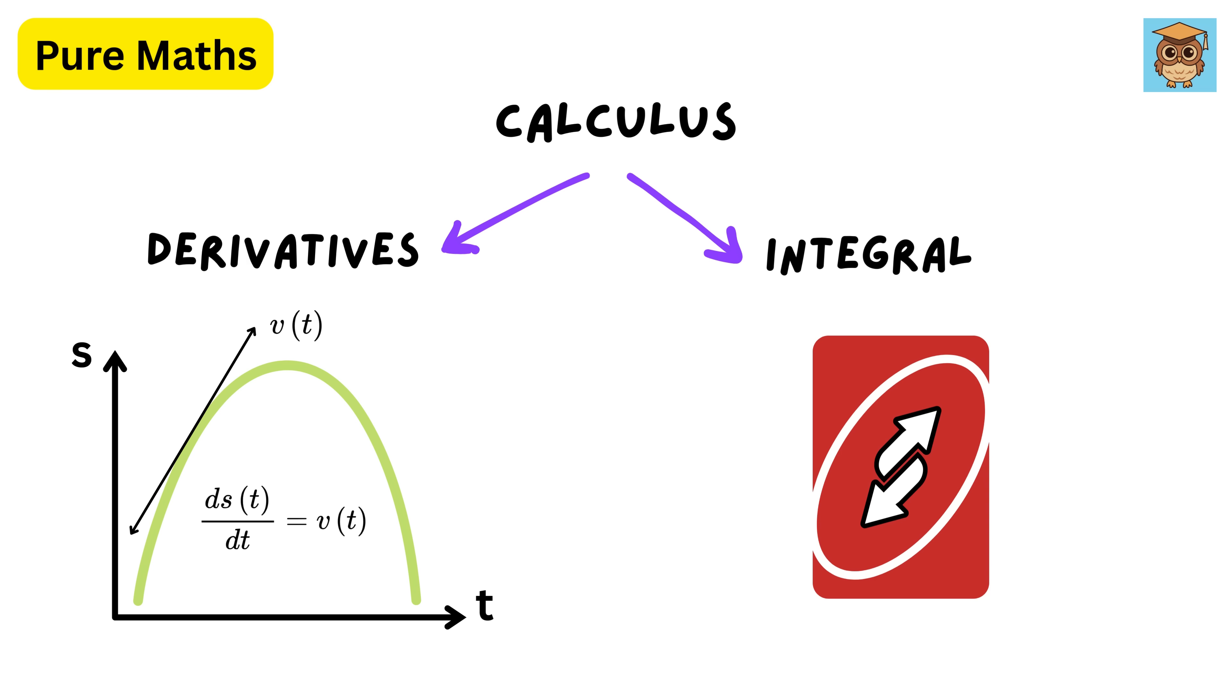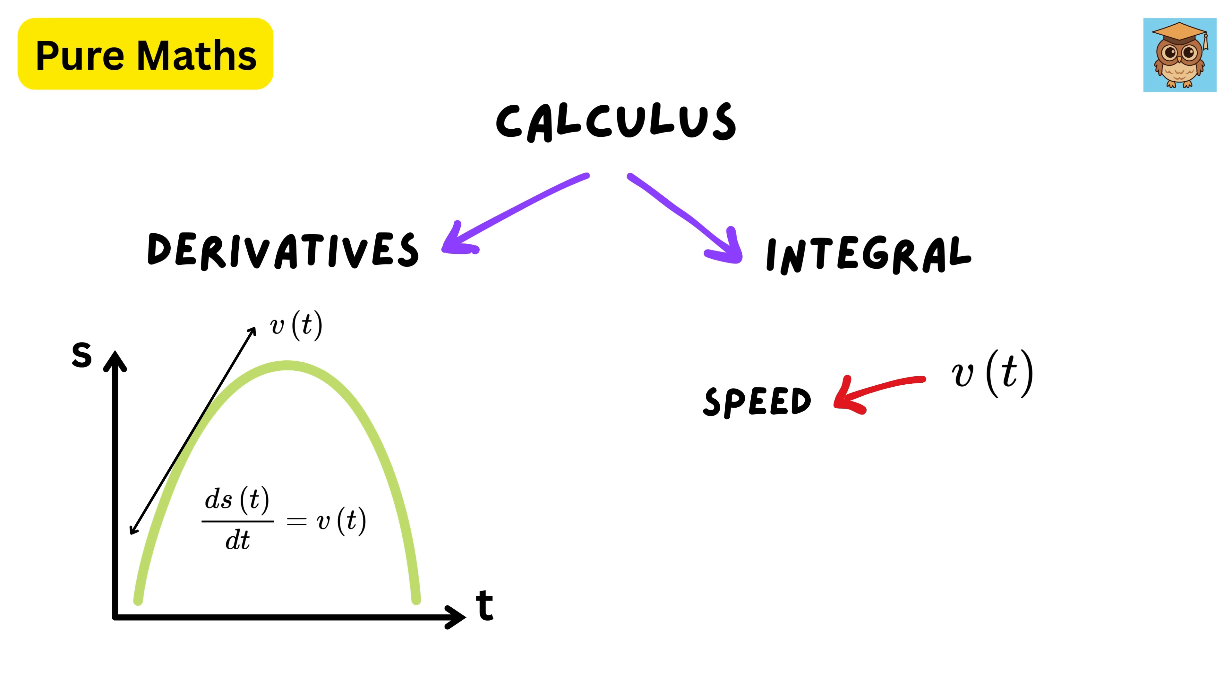Integration is the reverse process of differentiation. If a car's speed is given by v(t), and we want to find the total distance traveled by the car, we integrate it like this.